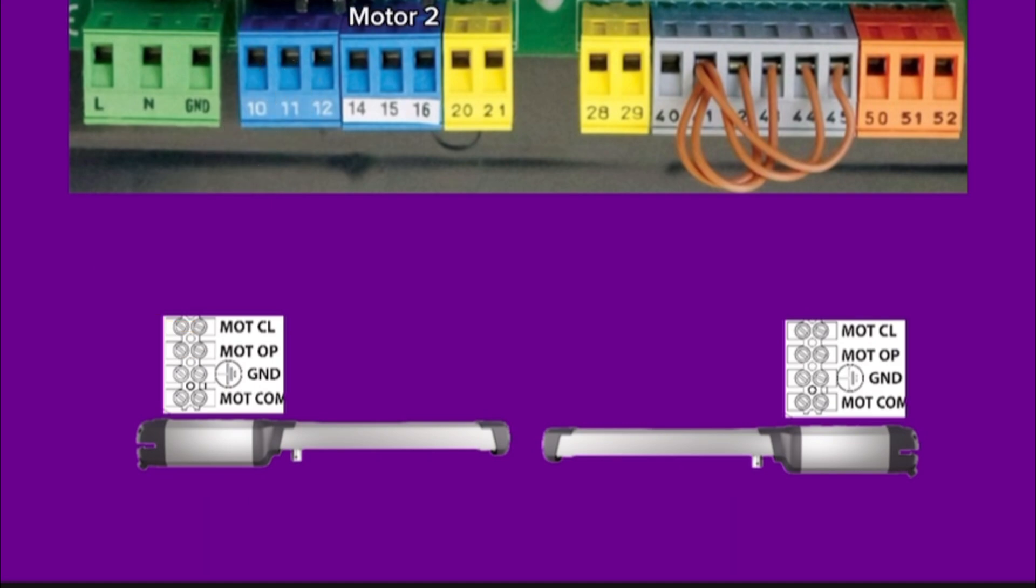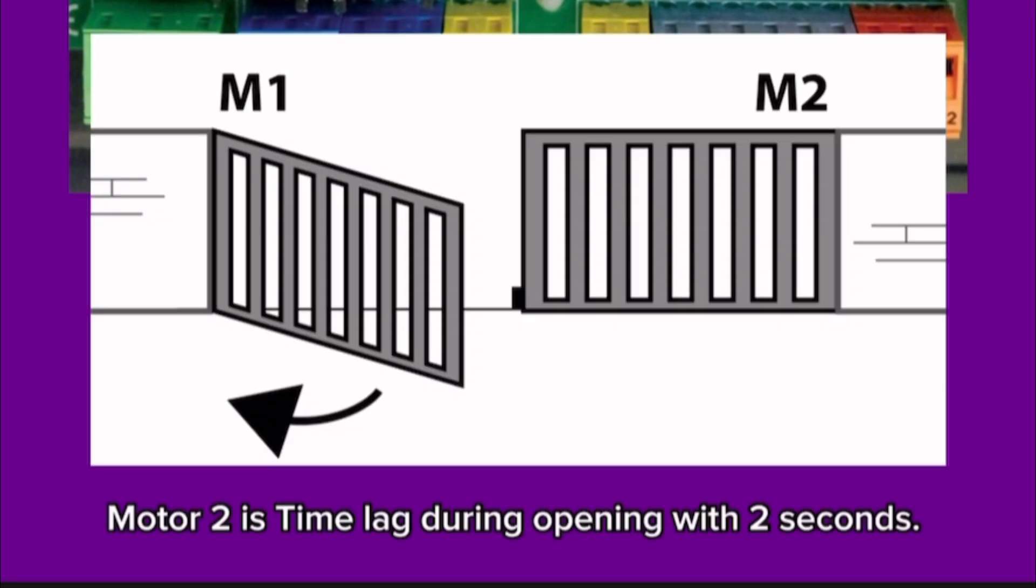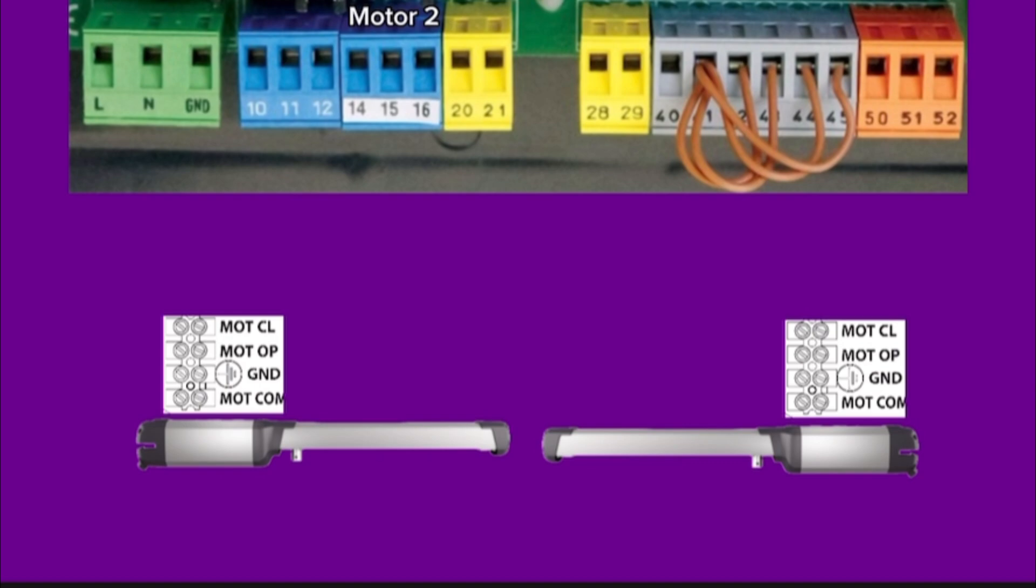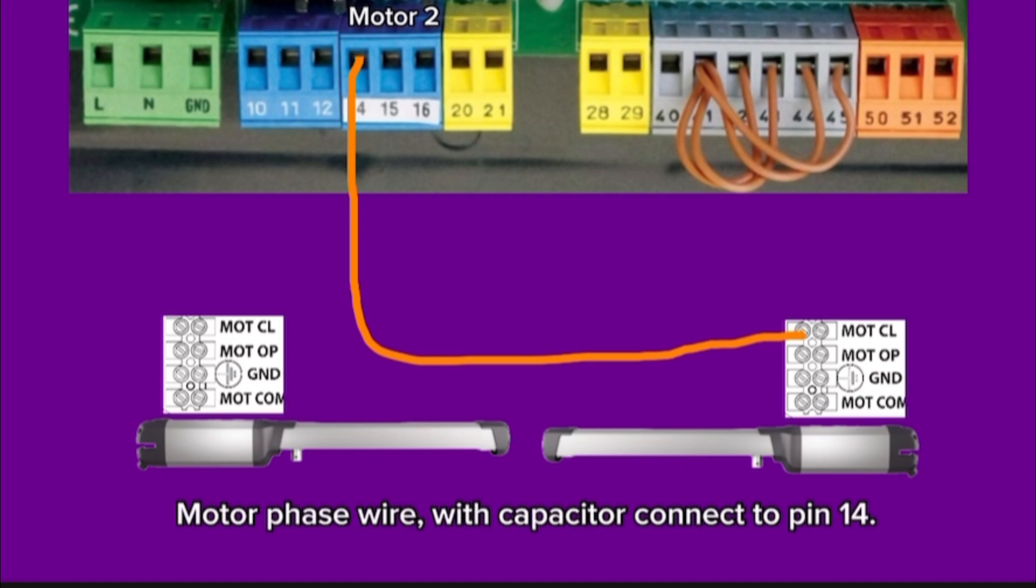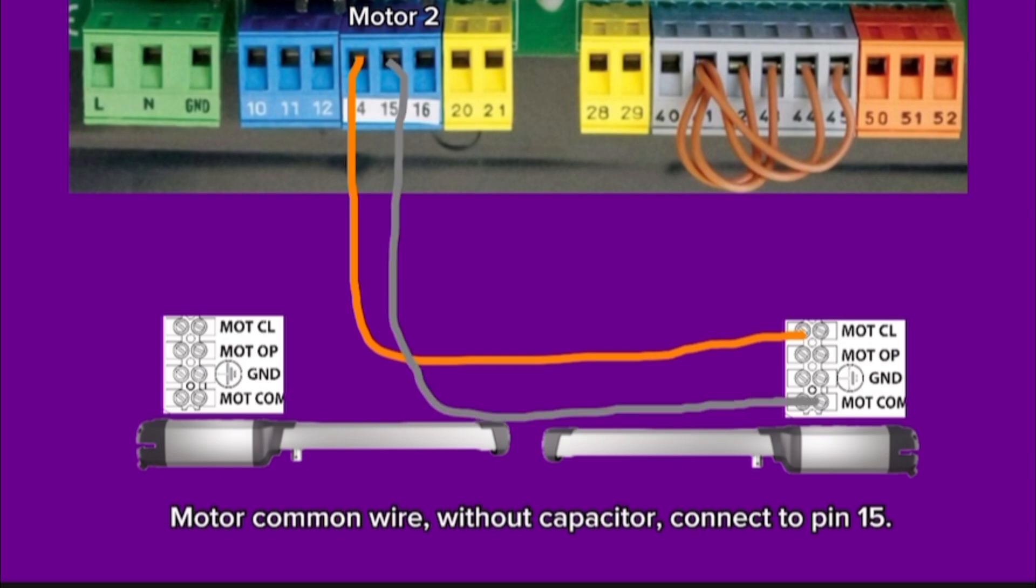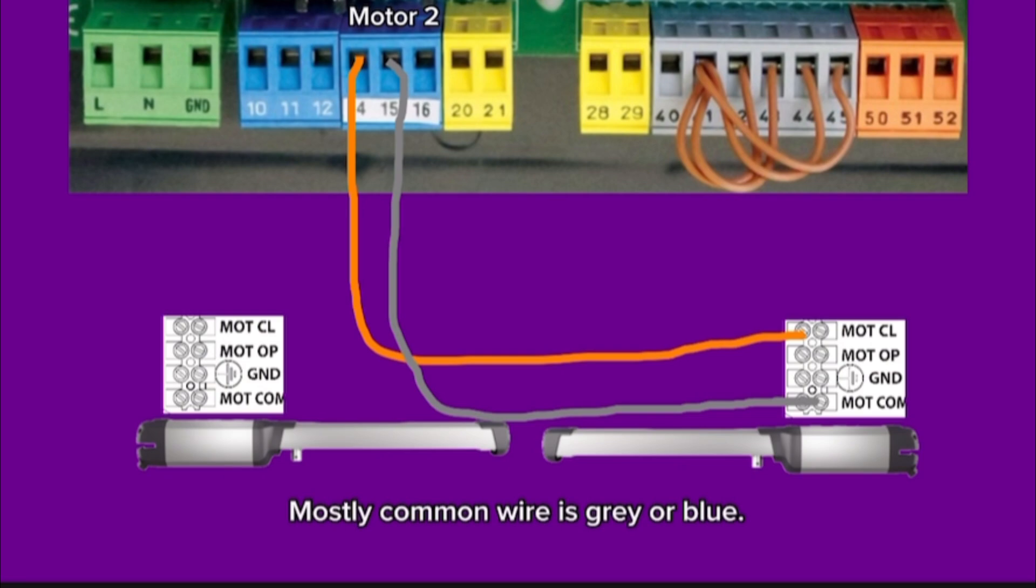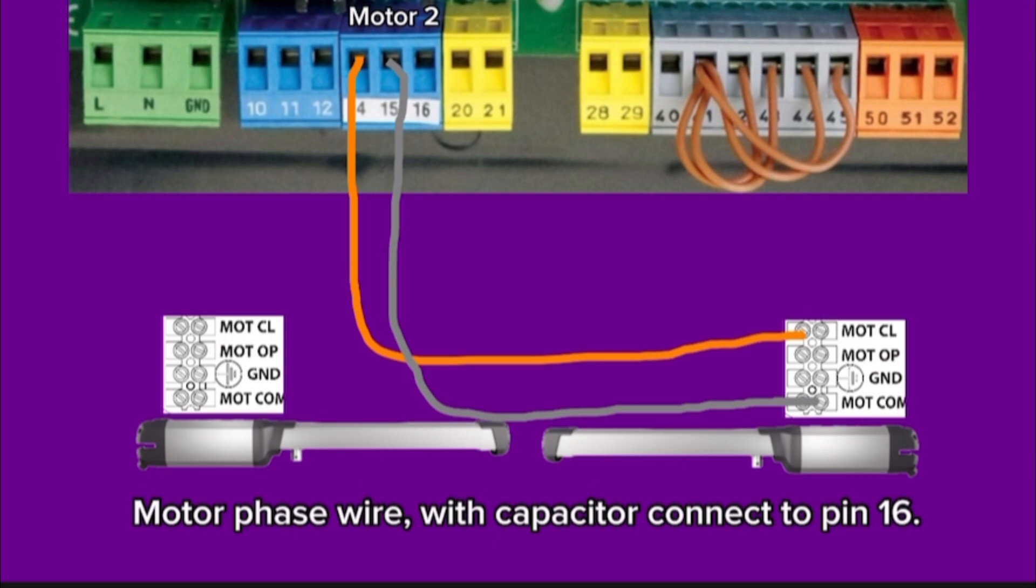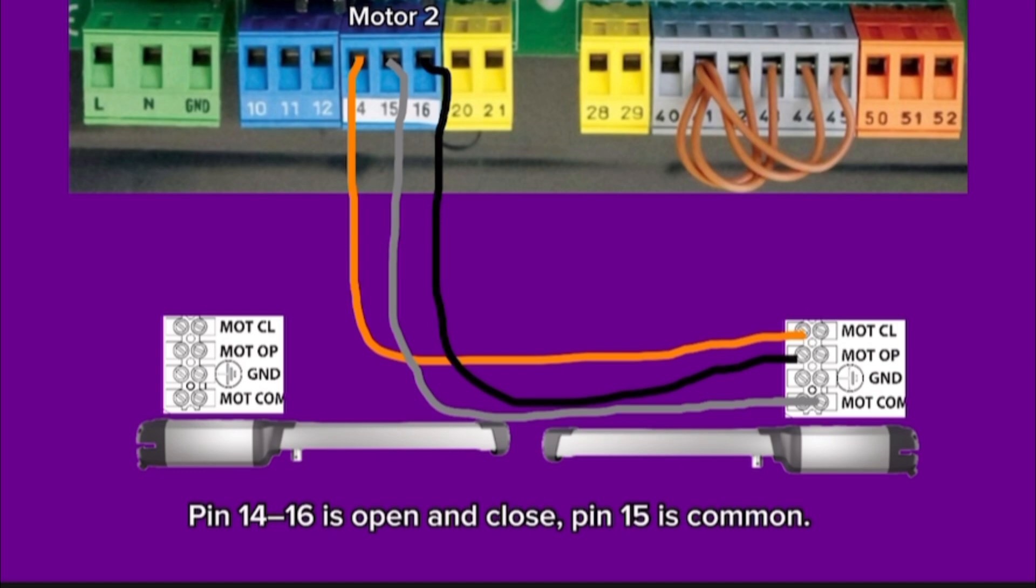Motor 2 connection. Pin 14, pin 15, and pin 16 are for motor 2. Motor 2 has time lag during opening with 2 seconds. Motor phase wire with capacitor connects to pin 14. Motor common wire without capacitor connects to pin 15. Motor phase wire with capacitor connects to pin 16. Pin 14 and pin 16 are open and close wires, and pin 15 is common wire of motor 2.